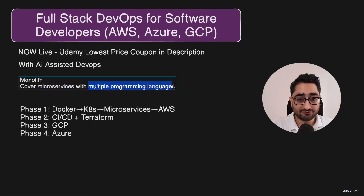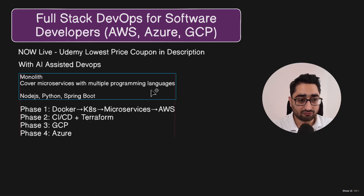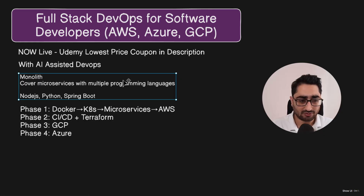The course uses multiple programming languages. If you're coming from a Node.js background, there's an app for that. There is also an app for Python, and one using Spring Boot. I show you how you can do DevOps on monolith and full stack microservices, across apps written in all the major programming languages. Whether you're coming from Node.js, Python, or Spring Boot, it's all covered.